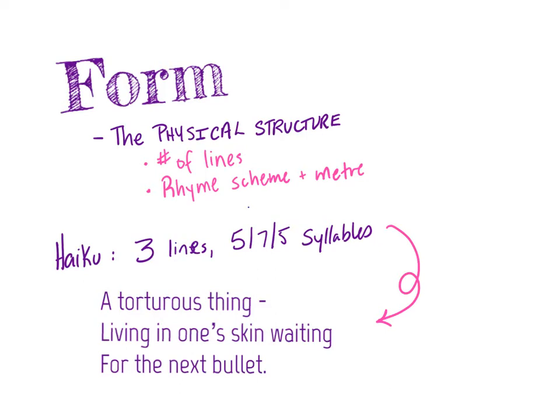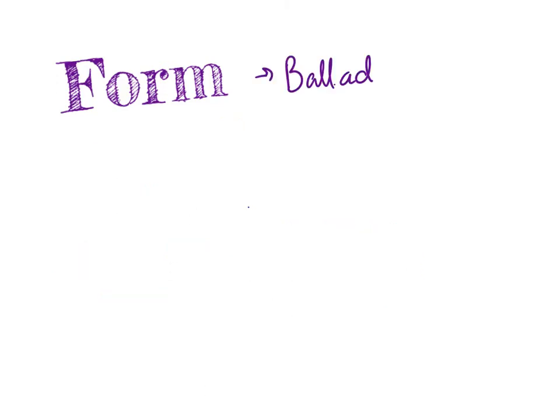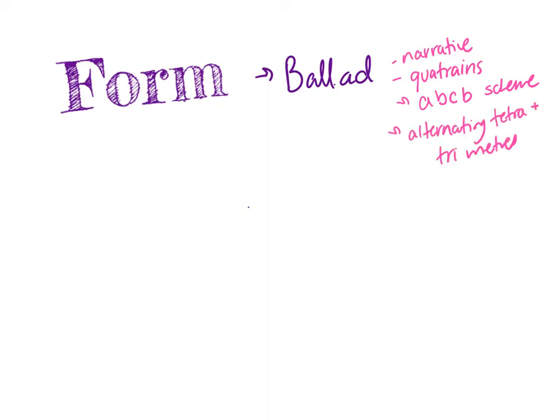Other forms are a bit longer and have certain purposes. For example, a ballad is a more rigid form that often functions as a storytelling poem. The structure of a ballad is usually composed of four-line stanzas, which is called a quatrain, with a rhyme scheme of ABCB or sometimes ABAB. The key is that the second and fourth lines rhyme. The first and third lines have four stresses — tetrameter — while the second and fourth have three stresses, which is called trimeter.